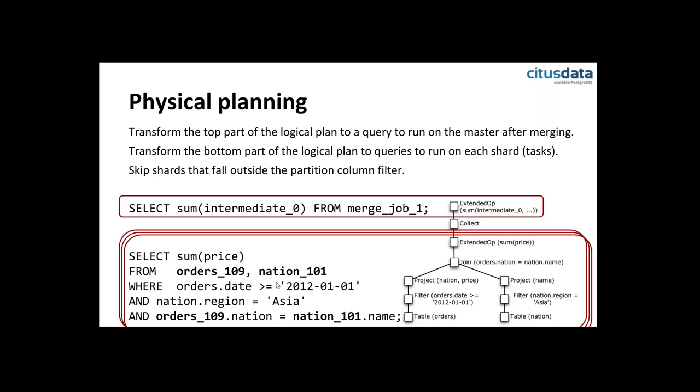There are other cases involving bigger tables where we can join shard by shard if they're partitioned in the same way. Sometimes we need to do a little extra — if we're joining by a key which is not a partition key, we need to repartition the table before we can do the join. We try to avoid repartition joins because they're not very fast — a lot of data flowing over the network. The output of the physical planning stage will be a bunch of worker queries to run on the workers, and then one query to run on the master afterwards.